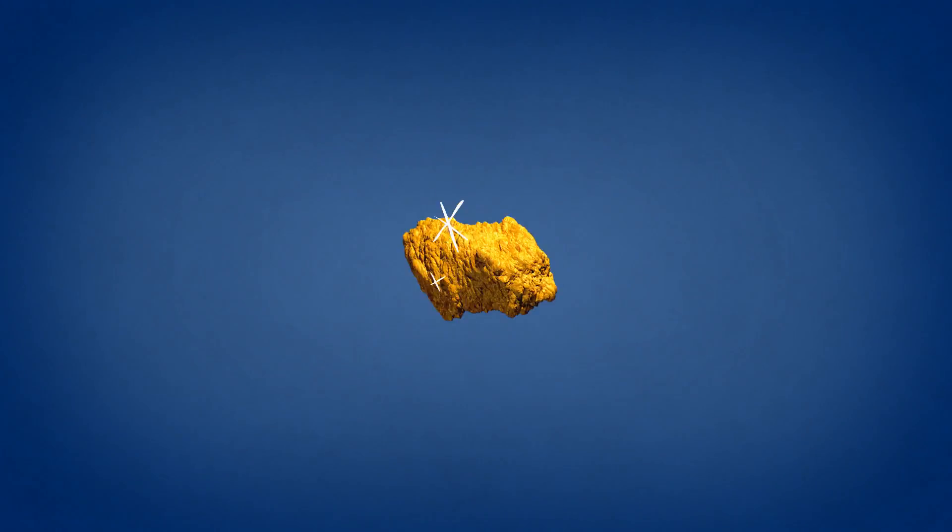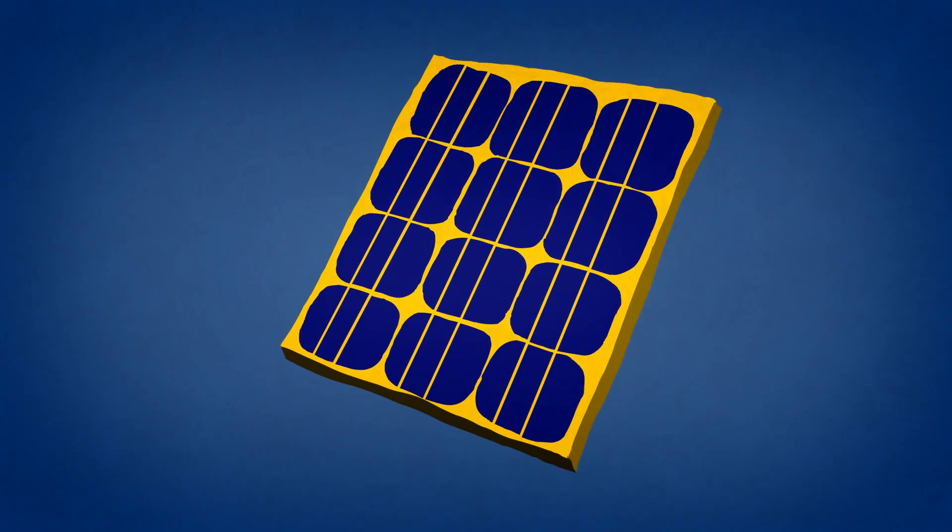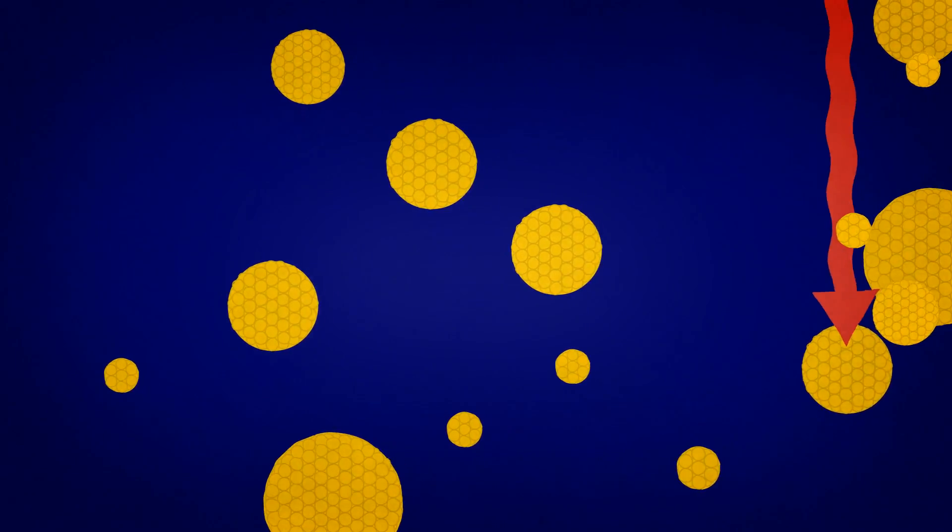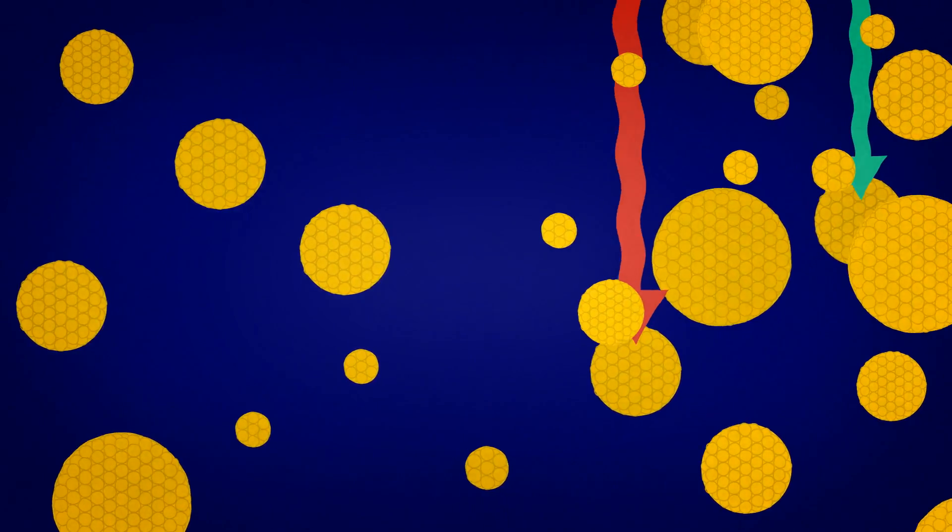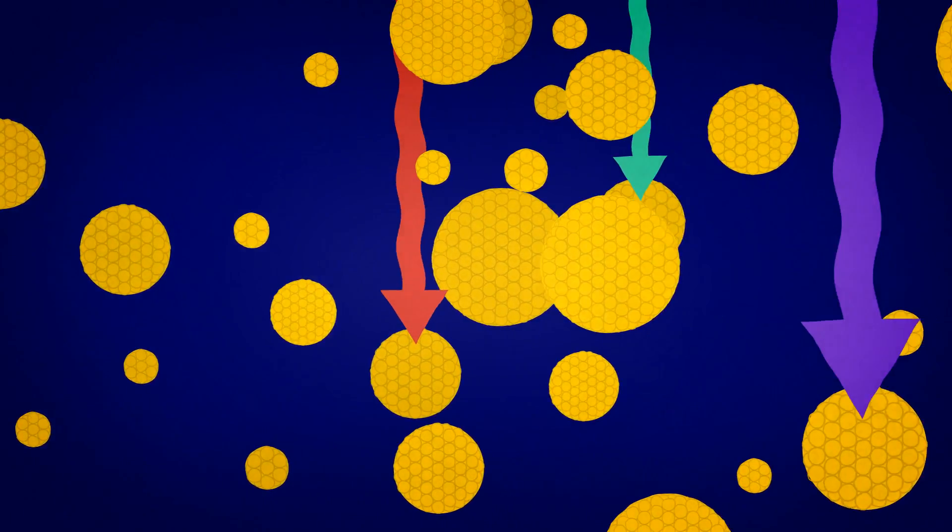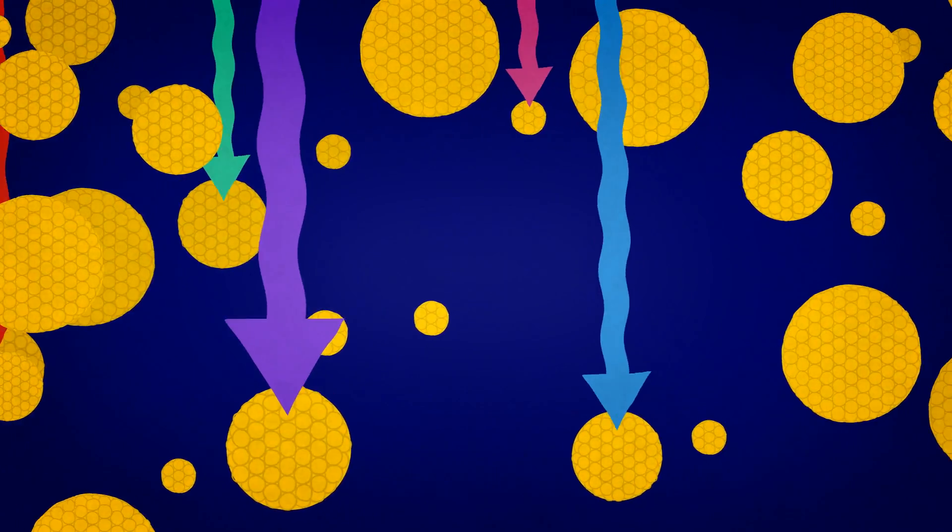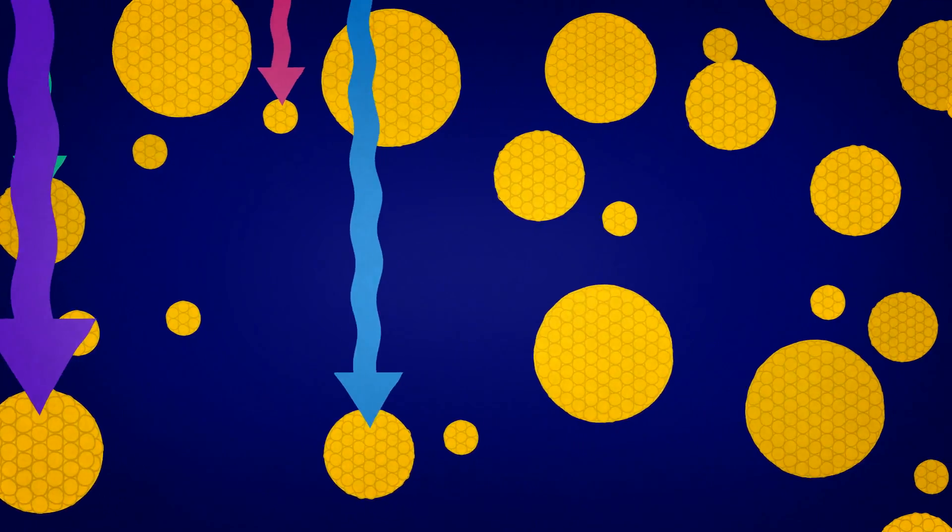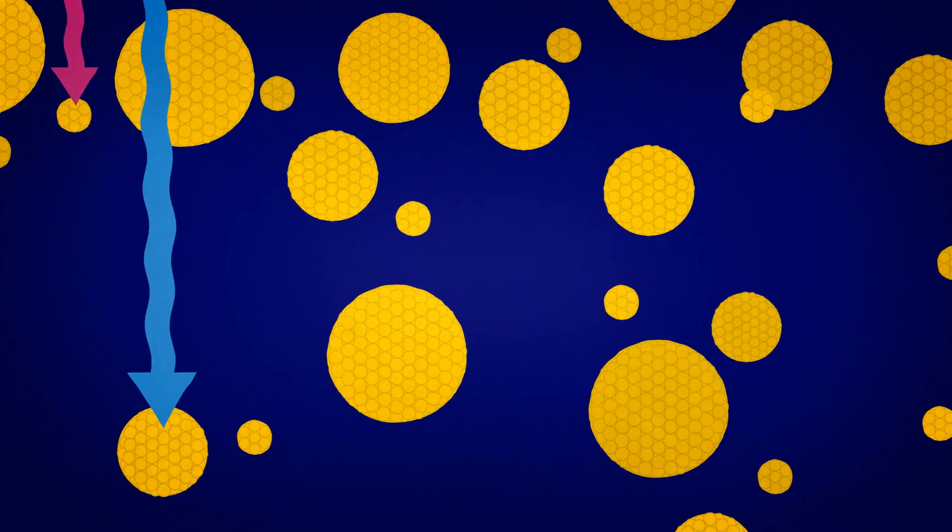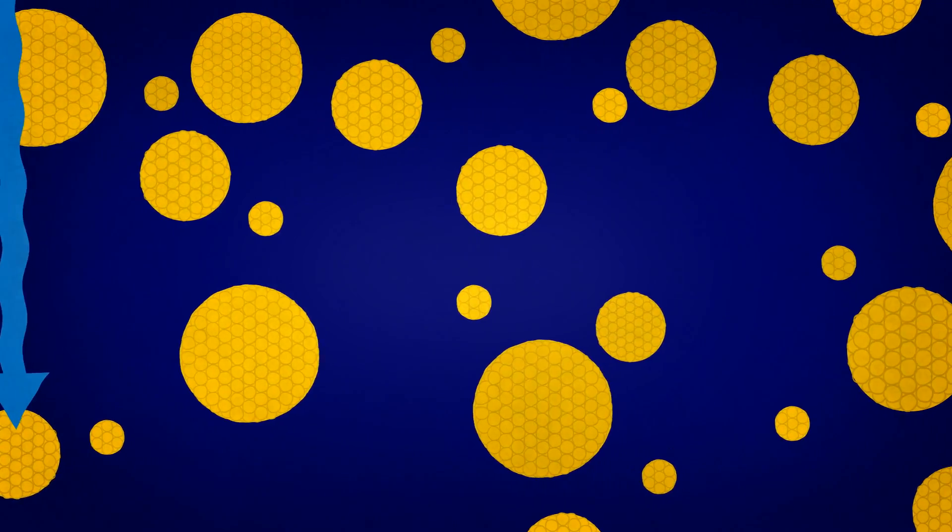But that's not all they can do. Gold nanoparticles of slightly different sizes absorb slightly different wavelengths of light. So by gathering together different sizes of nanoparticles, it should be possible to make solar cells that can absorb more sunlight. Scientists are working on this as one way to enhance the efficiency of solar cells.